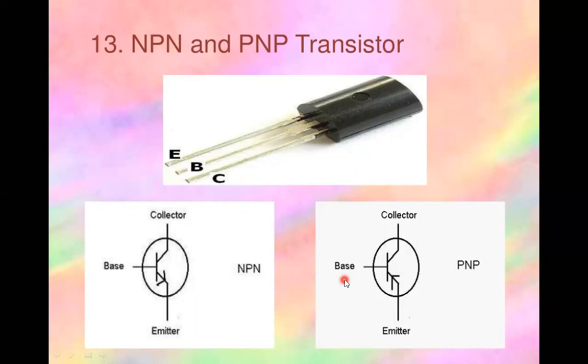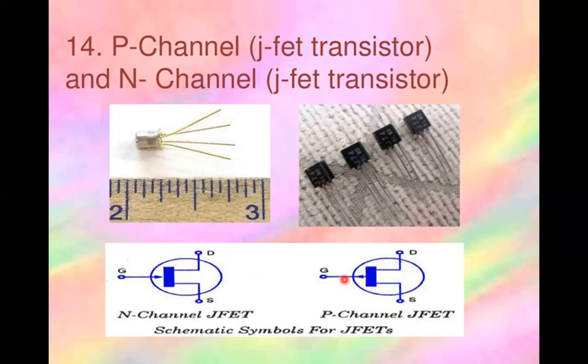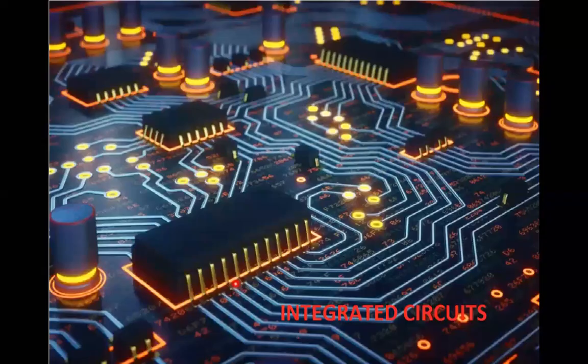The JFET (Junction Gate Field-Effect Transistor) can be an N-channel or P-channel JFET. It is the simplest type of FET. JFETs are three-terminal semiconductor devices that can be used as electronically controlled switches, amplifiers, or voltage-controlled resistors. The three terminals are gate, drain, and source. In symbols, an arrow pointing toward the gate indicates P-type (P-channel), and an arrow pointing outward indicates N-type (N-channel).